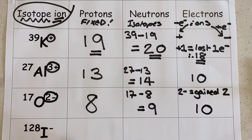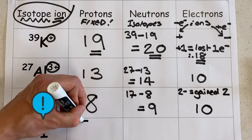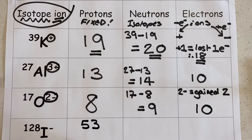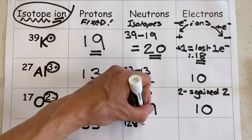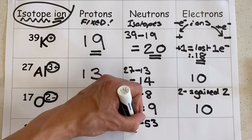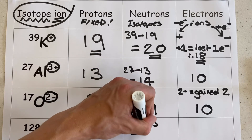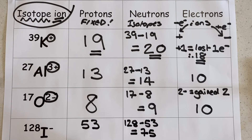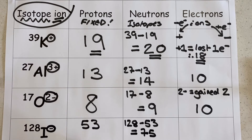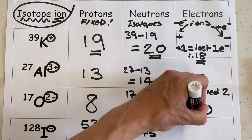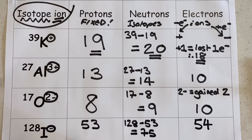Let's use this iodine anion as our final example. The number of protons is 53, because that's found on the periodic table and it's fixed. The number of neutrons can be easily calculated by taking the isotope mass number of 128 and subtracting from it the number of protons, 53, giving us 75 neutrons in this particular isotope. The number of electrons — remember protons and electrons are equal in neutral atoms, but this is a negative ion, so it's gained an electron, giving us 54 compared to 53 protons.